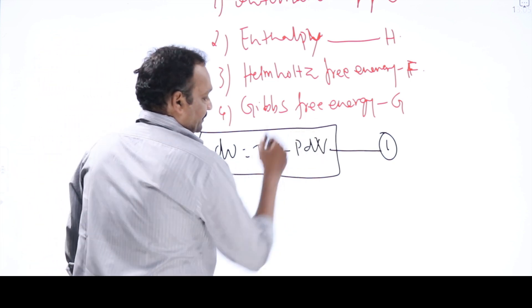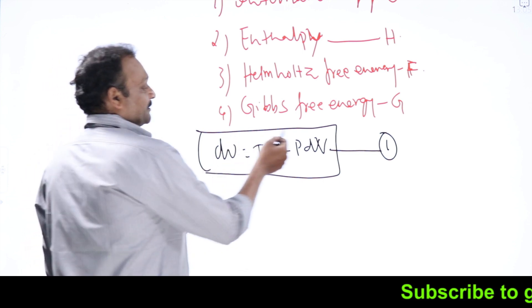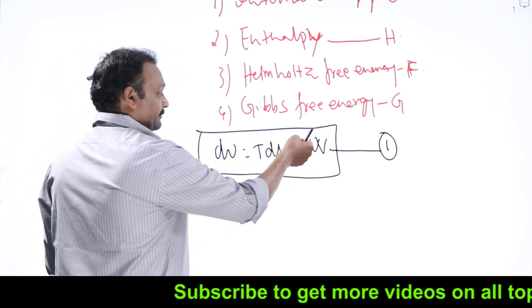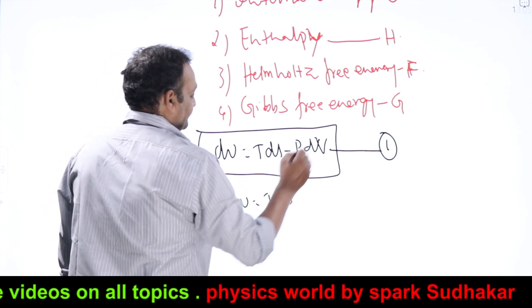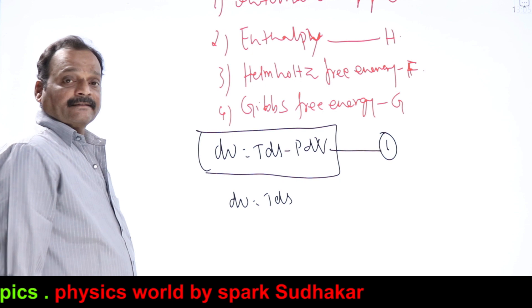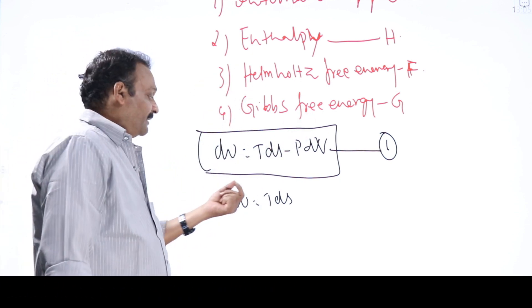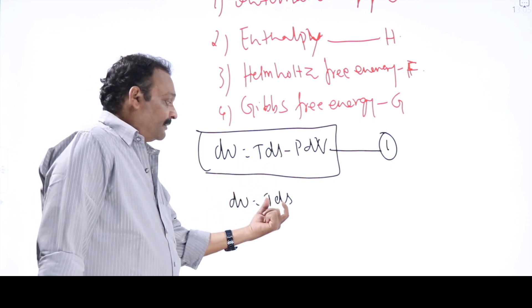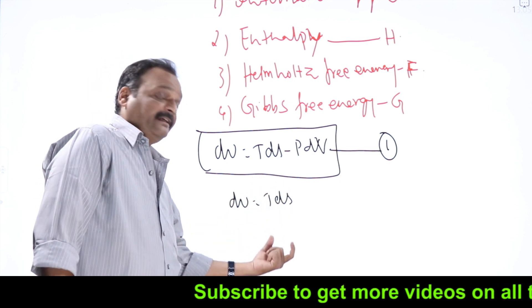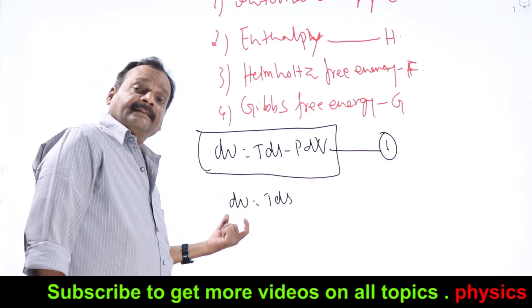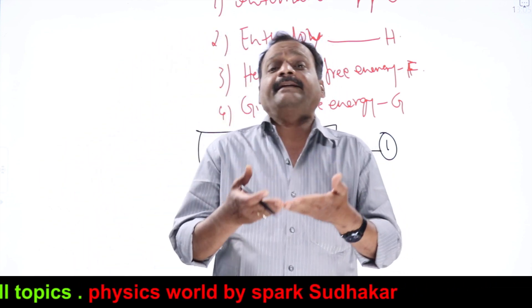In an isochoric process, volume remains constant, so dV equals zero, meaning work done by or on the gas equals zero. When P dV equals zero, dU equals T dS. T dS is the amount of heat given to or taken from the system. So whenever you give some heat delta Q, internal energy increases by the same amount. Whenever you take out heat from the system, internal energy decreases by the same amount — meaning internal energy is a measure of heat content in the system.